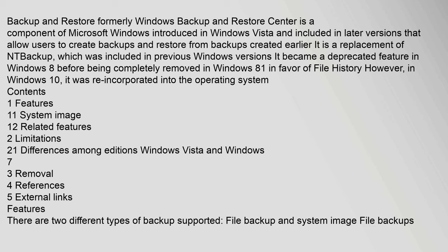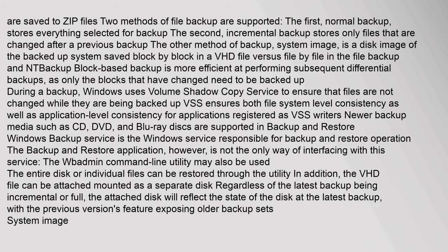There are two different types of backup supported: file backup and system image. File backups are saved to zip files. Two methods of file backup are supported. The first, normal backup, stores everything selected for backup. The second, incremental backup, stores only files that have changed after a previous backup.